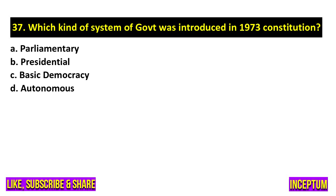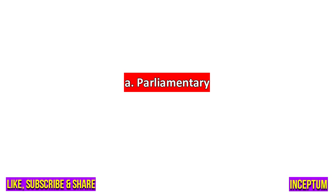Question number 37. Which kind of system of government was introduced in the 1973 constitution? In the options we have Parliamentary, Presidential, Basic Democracy, Autonomous. And the right one is option A, Parliamentary.